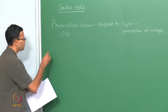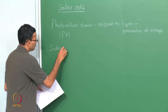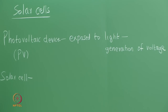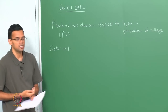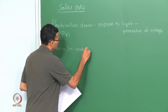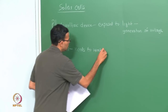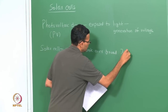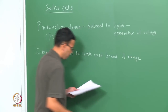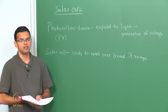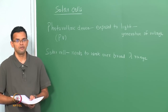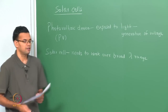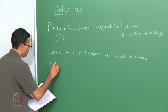In the case of a solar cell, we need the device to work over a broad wavelength range, and this wavelength range depends upon the solar spectrum. That is the first crucial difference between a solar cell and a photodetector — the wavelength range is imposed by the spectrum. Also, in the case of a photodetector, the metric is the quantum efficiency.